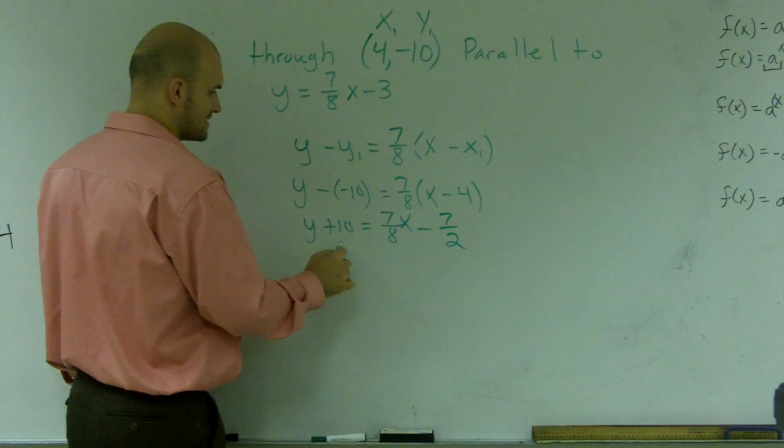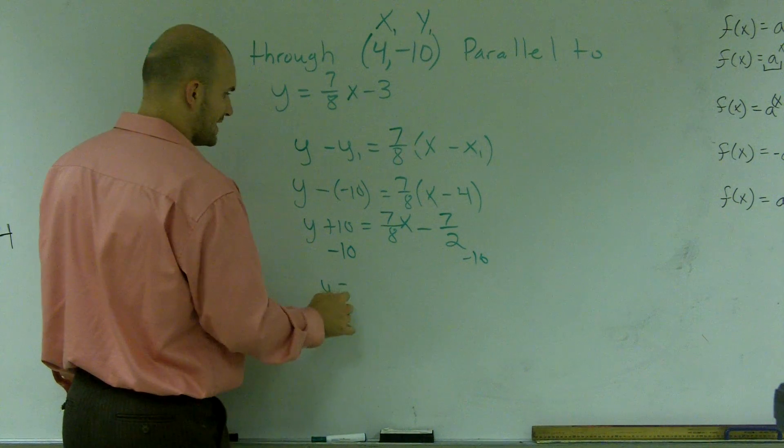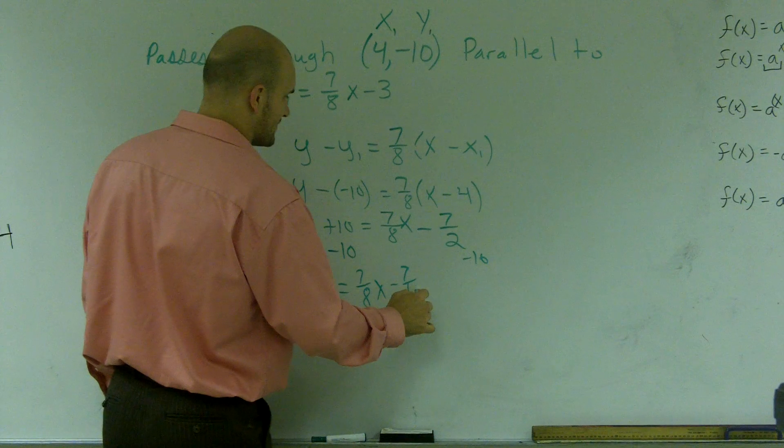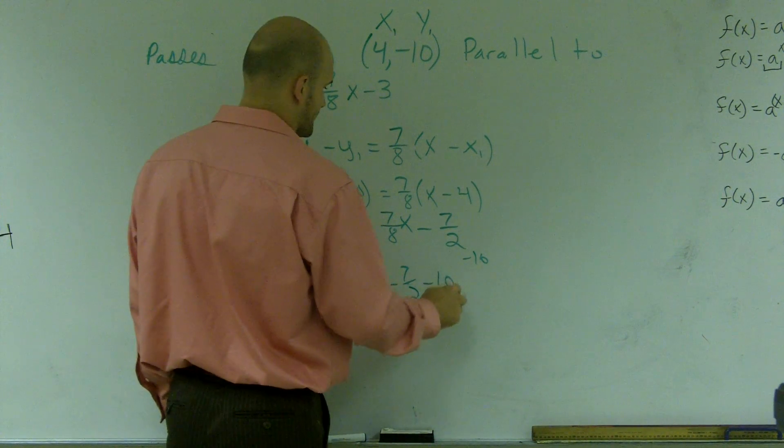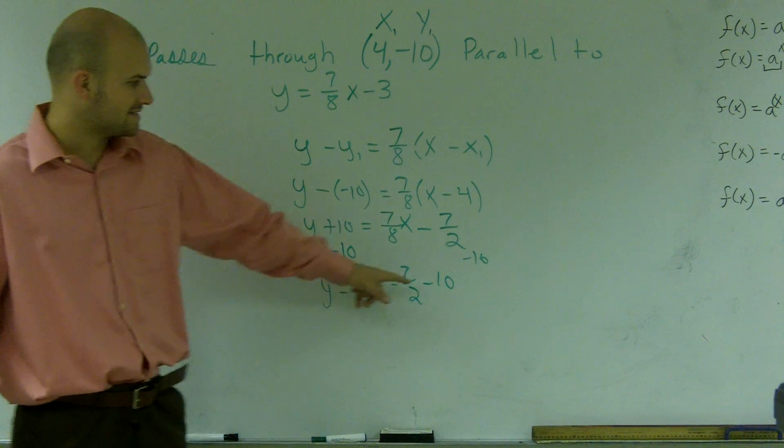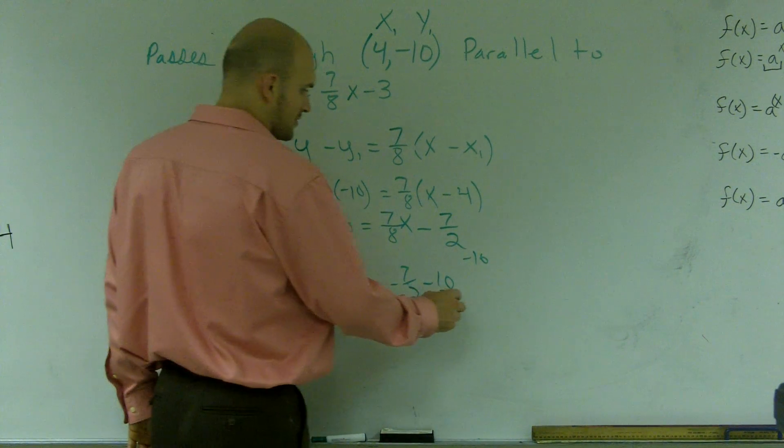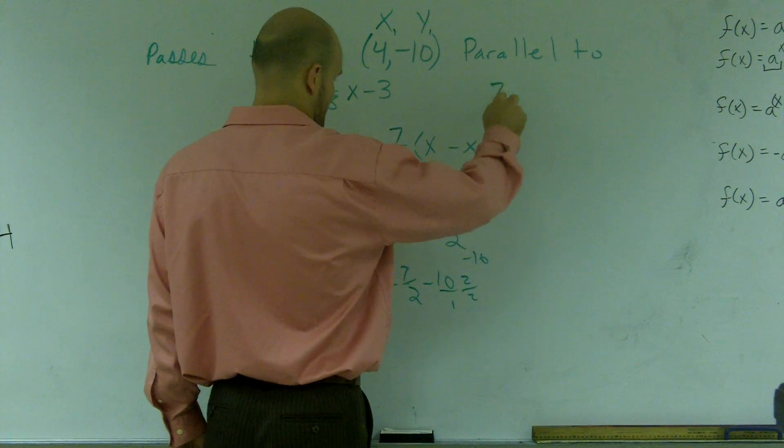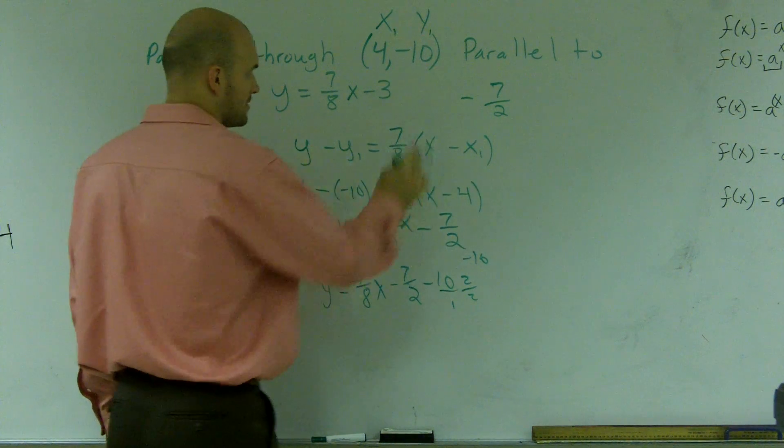Then what I'd like to do is subtract the 10 from both sides. So I get y equals 7/8x minus 7/2 minus 10. Now obviously we need to get this to be a denominator of 2. So I'm going to put it over 1 and multiply by 2 over 2. So therefore I'll have 7/2. Since it's a negative 7, I'm just going to subtract it.